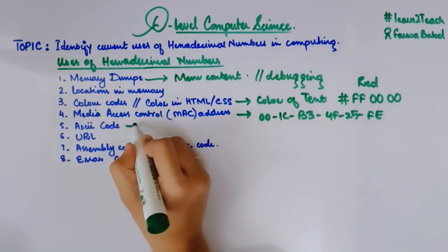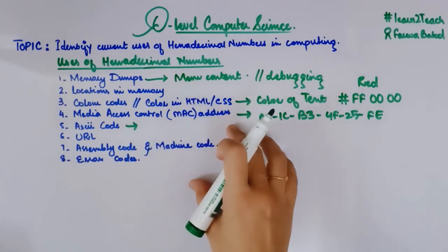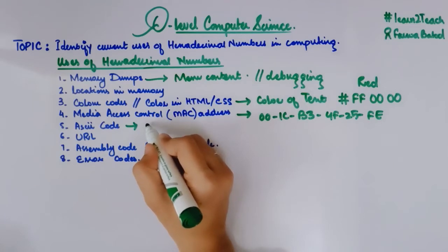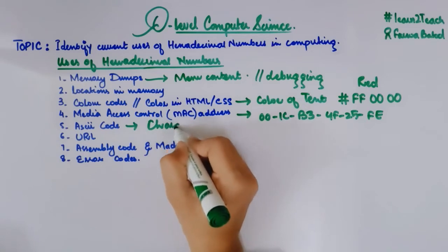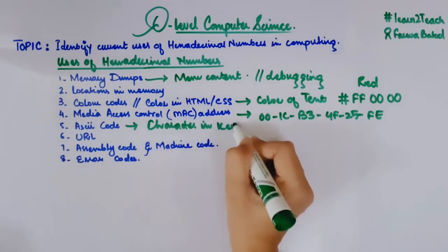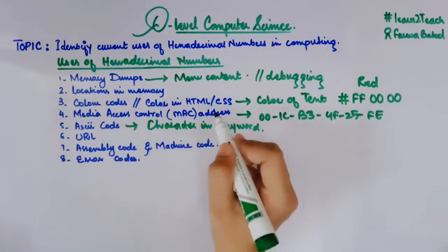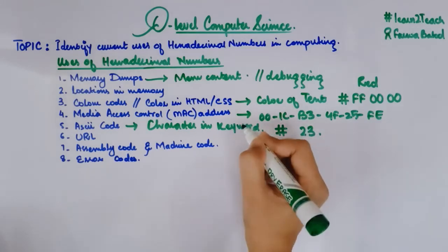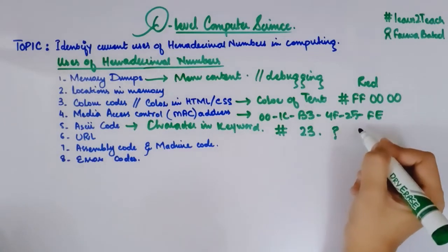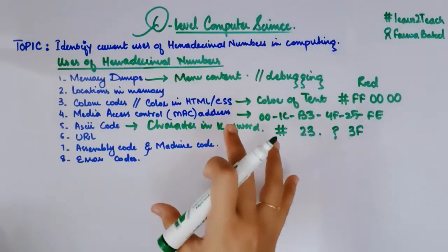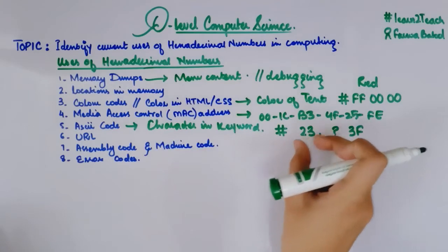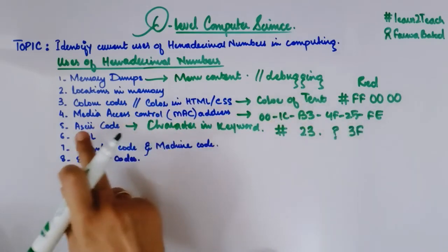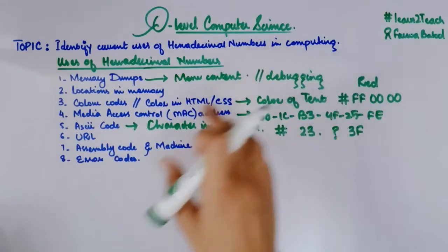Next is ASCII code. ASCII codes represent the characters on a keyboard — different symbols, characters, and numbers. Any character on a keyboard is represented in the form of an ASCII code. For example, the ASCII code for hash is 23, or the ASCII code for a question mark is 3F. There is a complete table that tells you the ASCII code or hexadecimal number representing a particular character on a keyboard. These ASCII codes are also written in the form of hexadecimal numbers or decimal numbers.